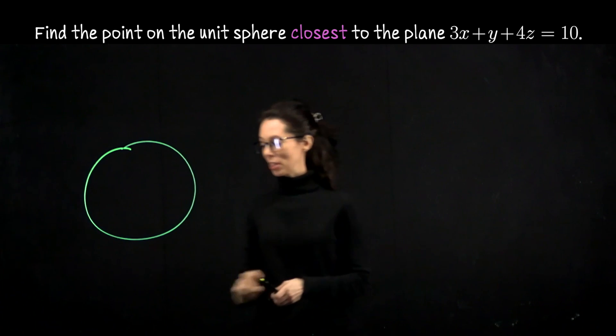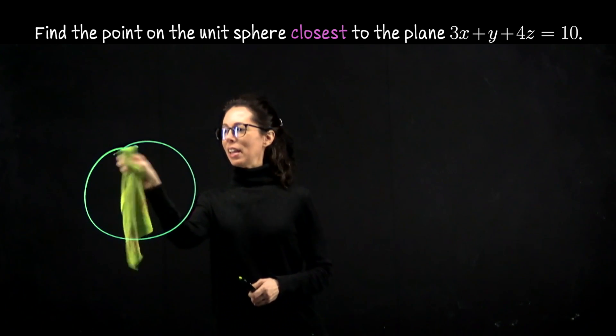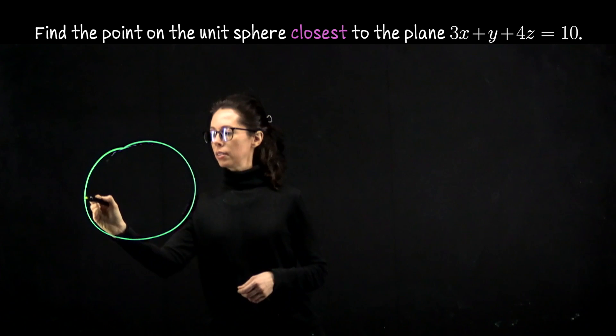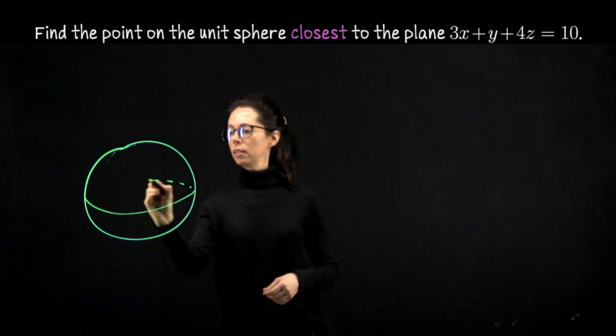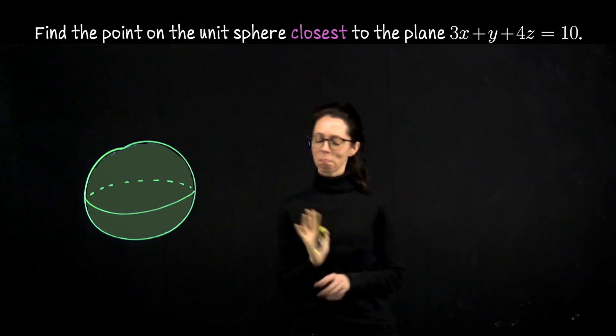Let's say that's a sphere, the unit sphere, and try to make it look a little bit more like a sphere. So here's the equator. Okay, that's good enough.